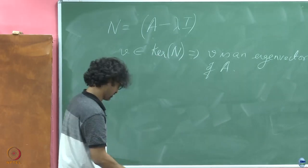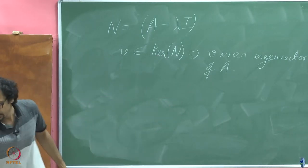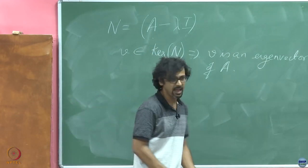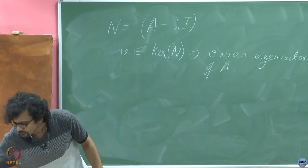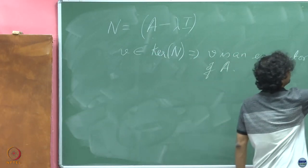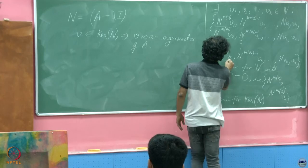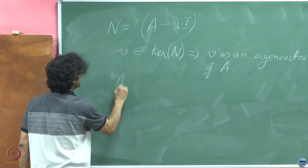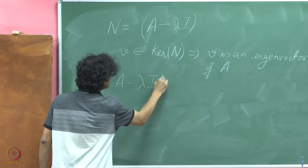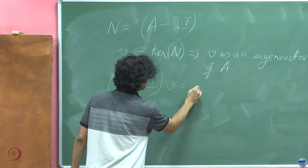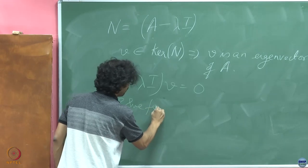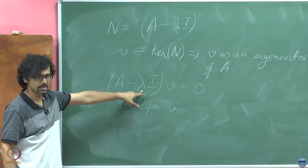So next, by looking at eigenvectors, we have a handle on the first fellows here. Okay? So we know how to do this. You take, set it up as A minus lambda I, v is equal to 0, solve for v, given that you know what the lambda is, you solve for v.